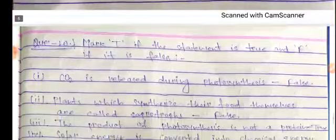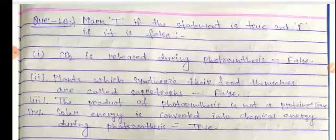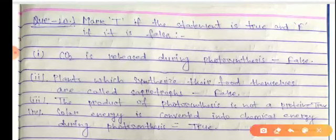Now mark T if the statement is true and F if it is false. Number one: carbon dioxide is released during photosynthesis. As you know, carbon dioxide is required during photosynthesis, so this is a false statement.